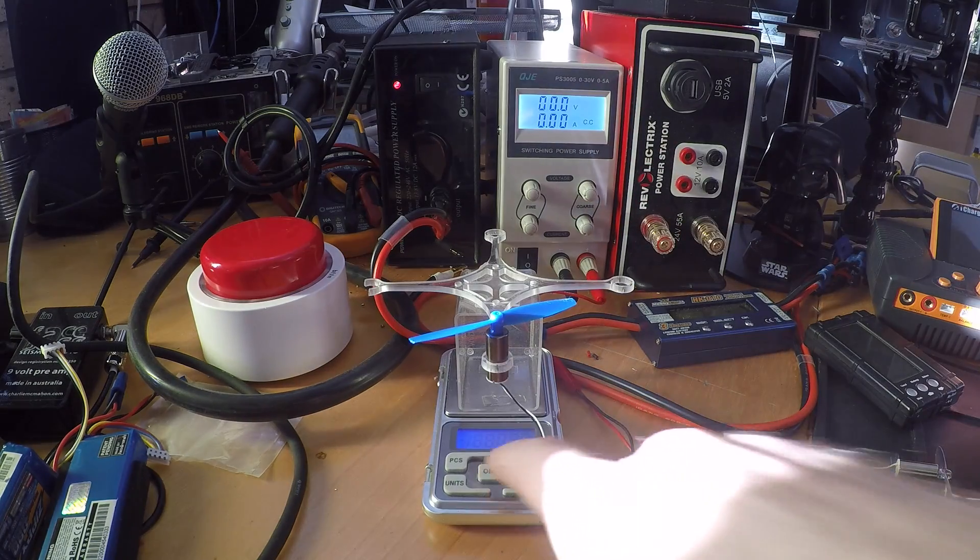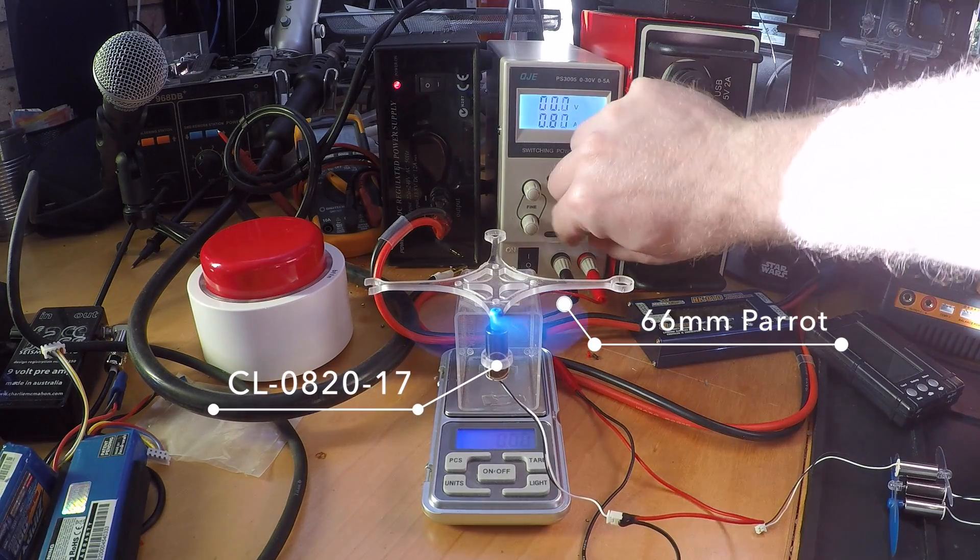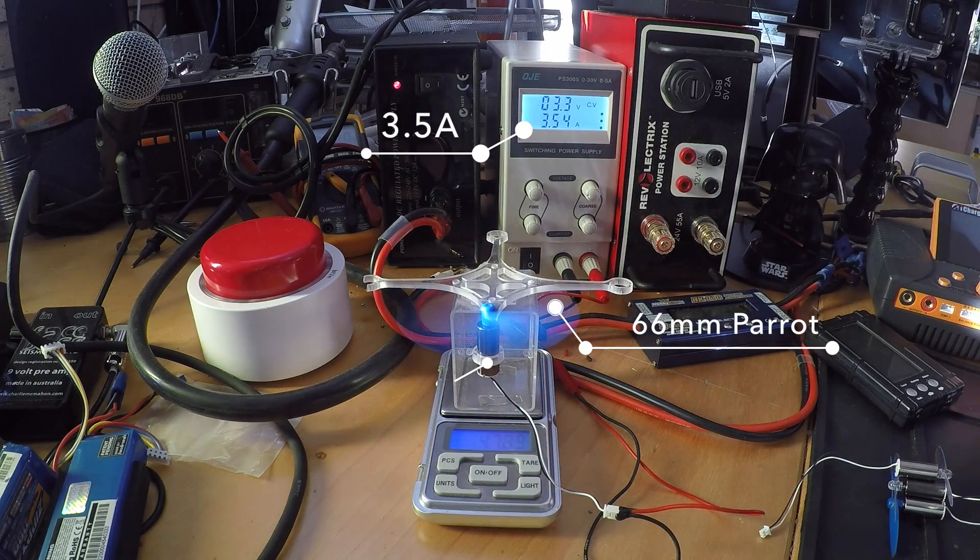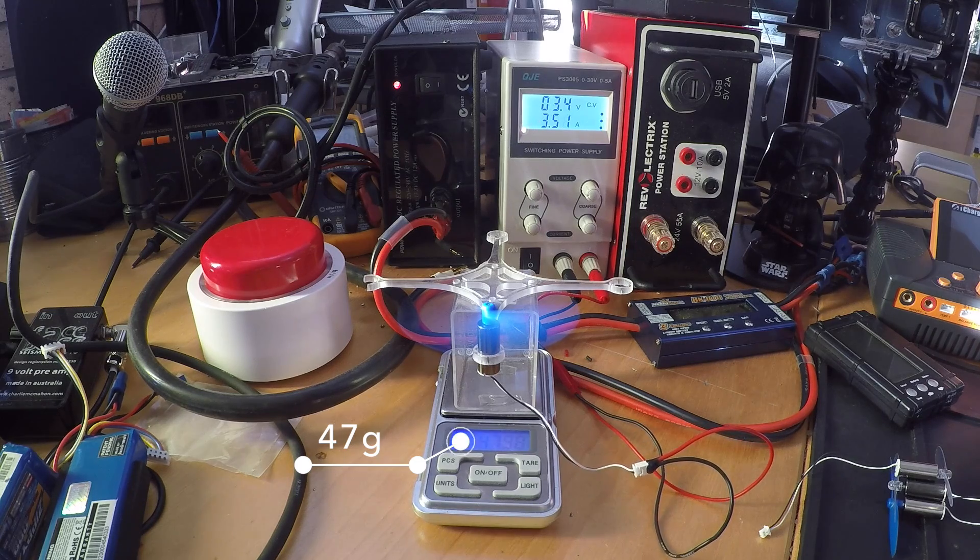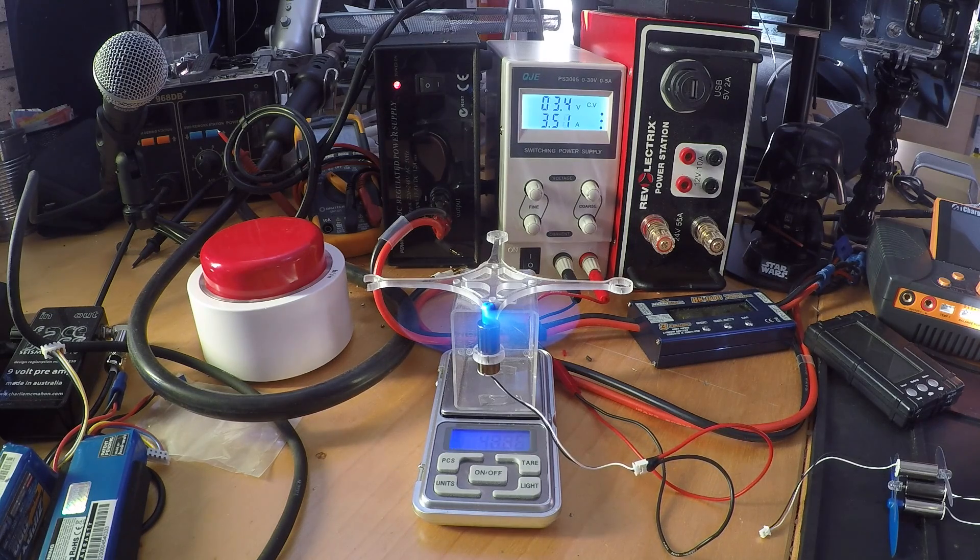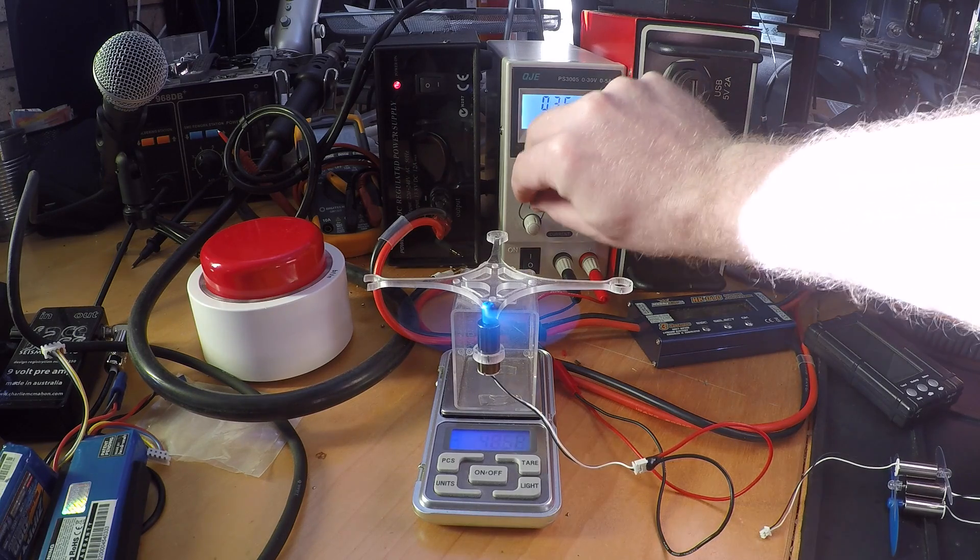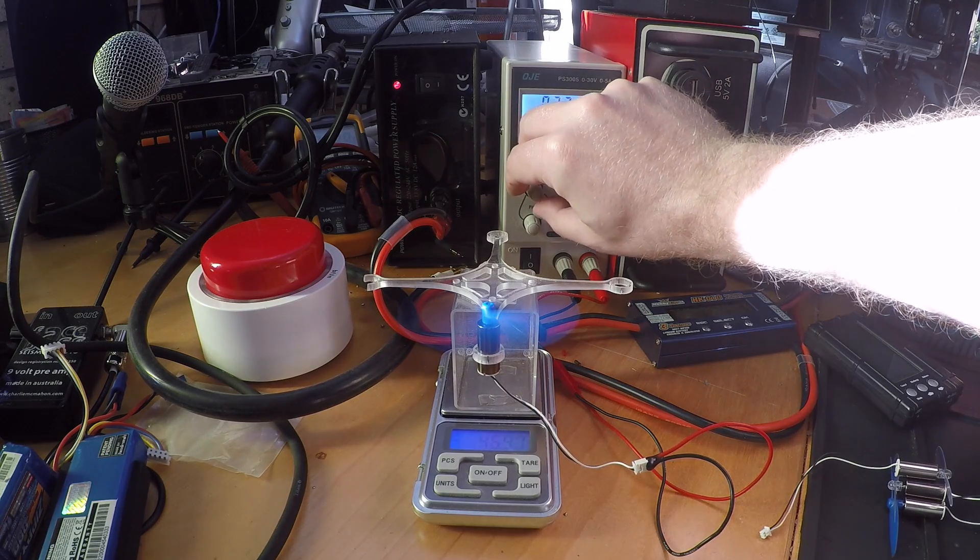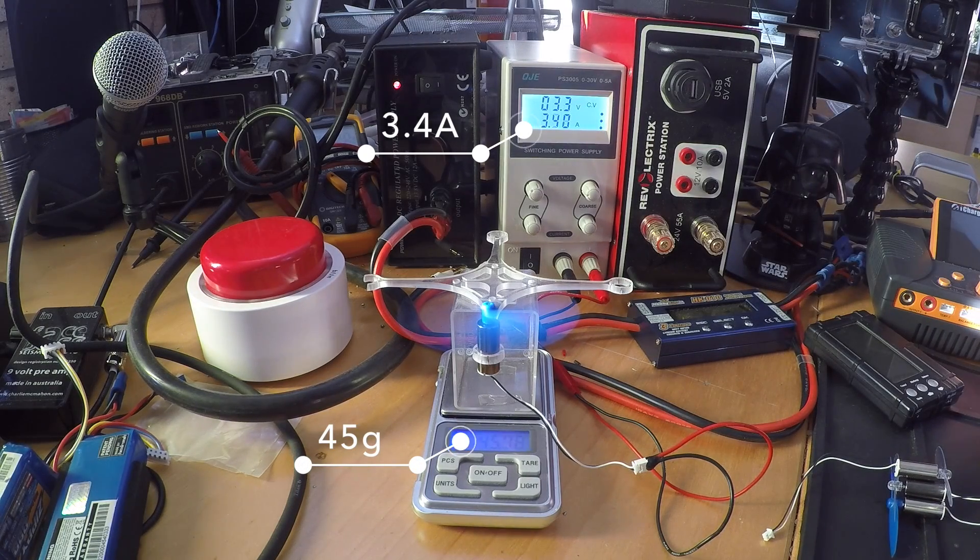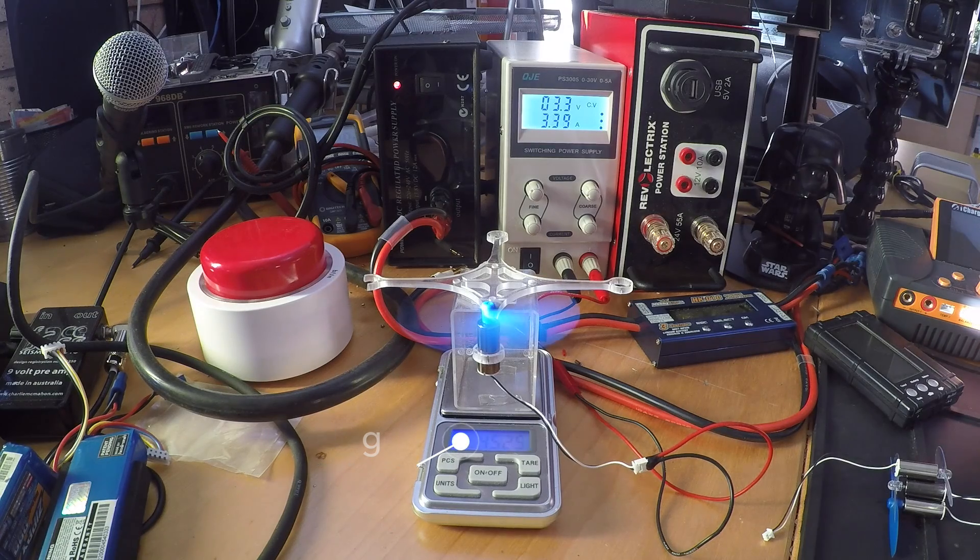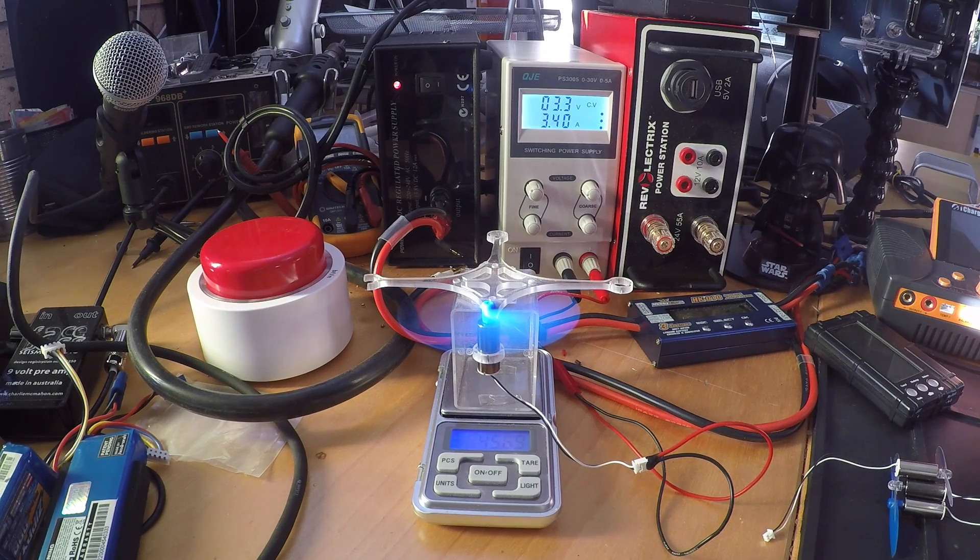The 17,000 kV motors with the 66 millimeter prop consumes 3.5 amps while producing 47 grams of thrust. Hang on, I gave it a little bit more voltage than the others. So it's 3.4 amps and 45 grams of thrust.